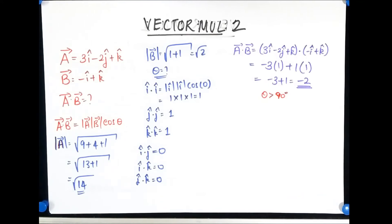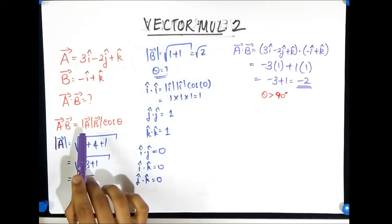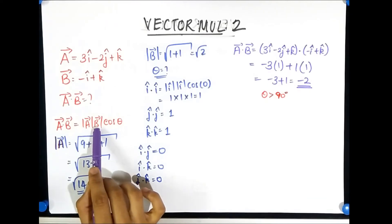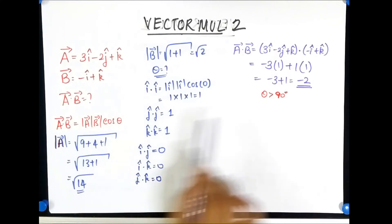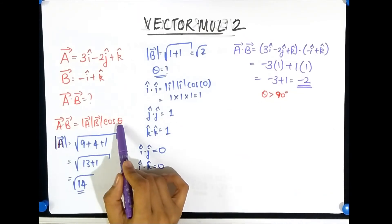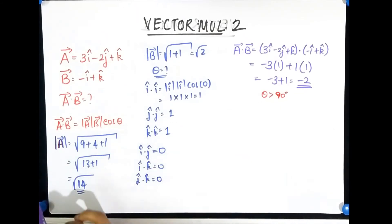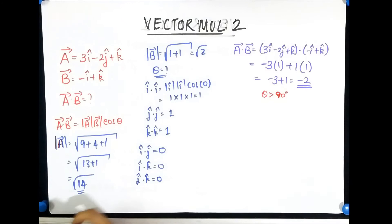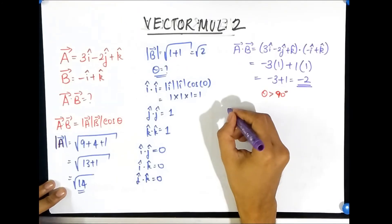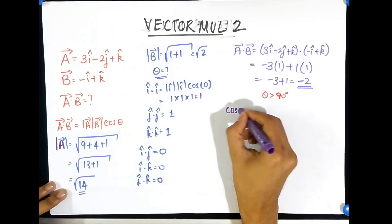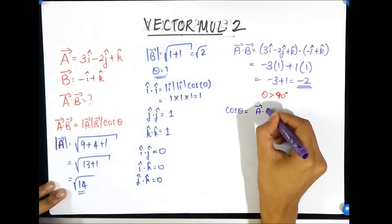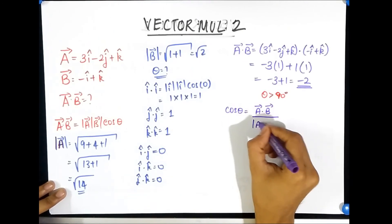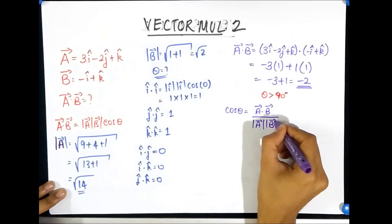But can we now calculate the angle? Think about it, we know what magnitude of a and magnitude of b are, we also know what a dot b is, we just calculated. So we just substitute and we can find out angle theta. Therefore dot product is a great way of calculating what the angle between two vectors are.